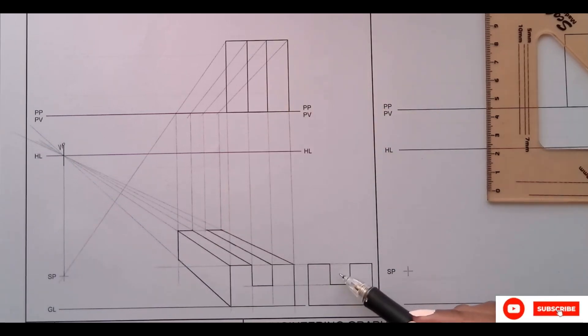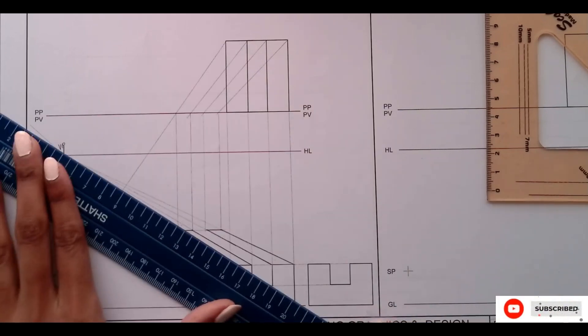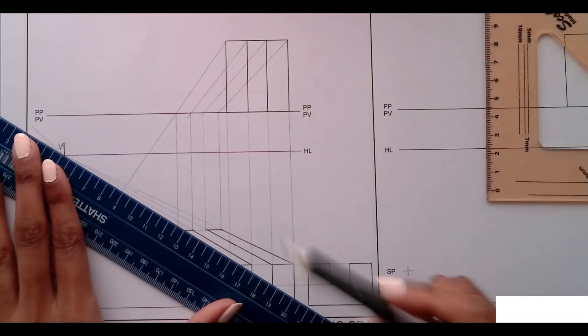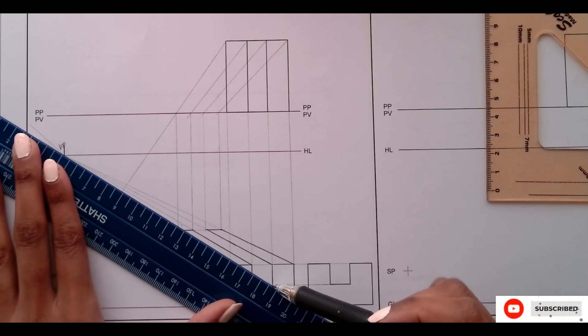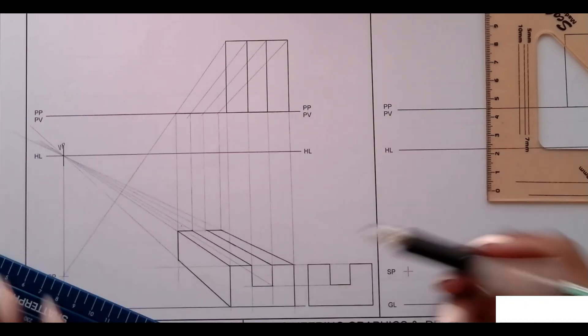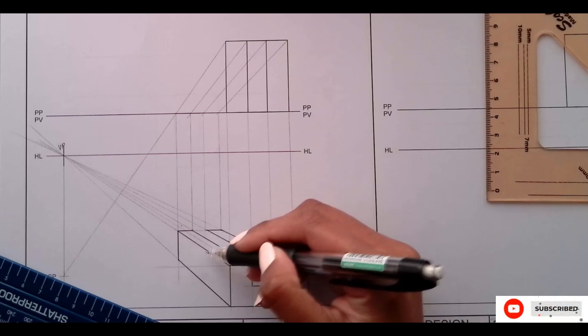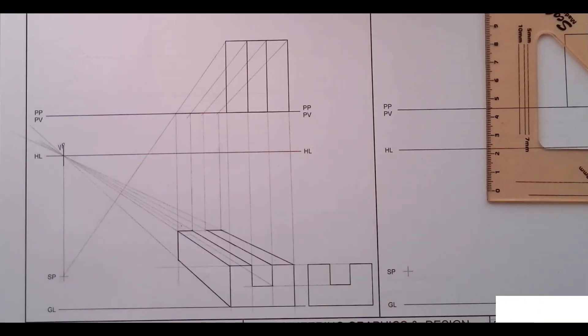Now we have to show this hole that is in here. And what do we do? We just take this inside corner here. That's going to show to the vanishing point, and then bring this line all the way to the surface.